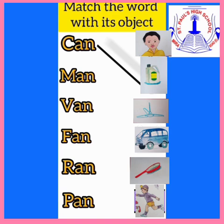Now we will go to the next word. M, A, N — man. Man. Find out where is the man. Yes, the man is in the first place in the picture. Draw the line and match it.